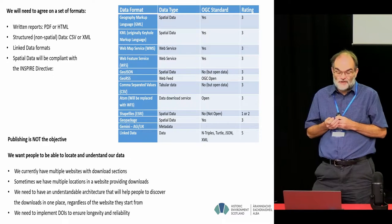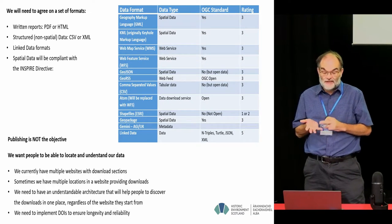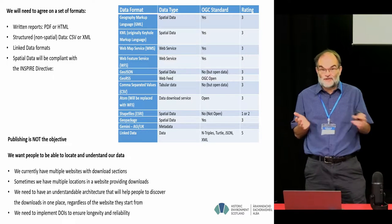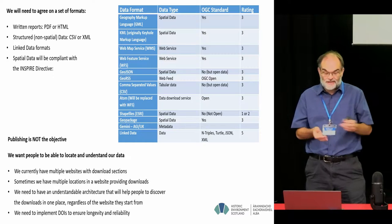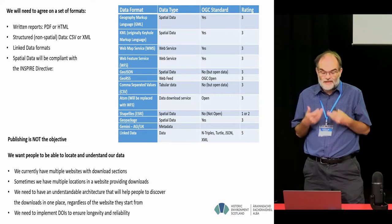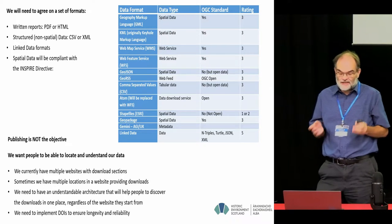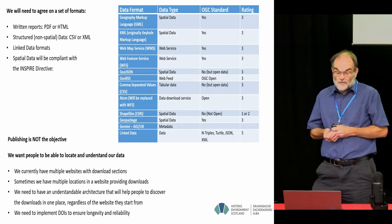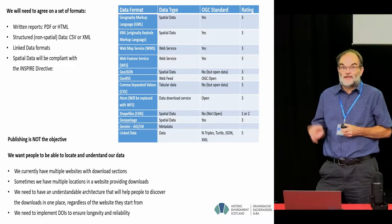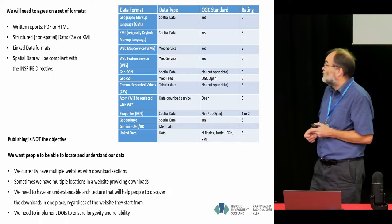Publishing is not the sole objective — we want people to be able to locate and understand our data. We actually have multiple websites with download sections, and you can go to different places to find different parts of the data that we hold. We need to develop an architecture that allows people to find our data consistently and easily, and we need to implement DOIs to make sure information is findable in the long term, with a persistent address for each item that we publish.